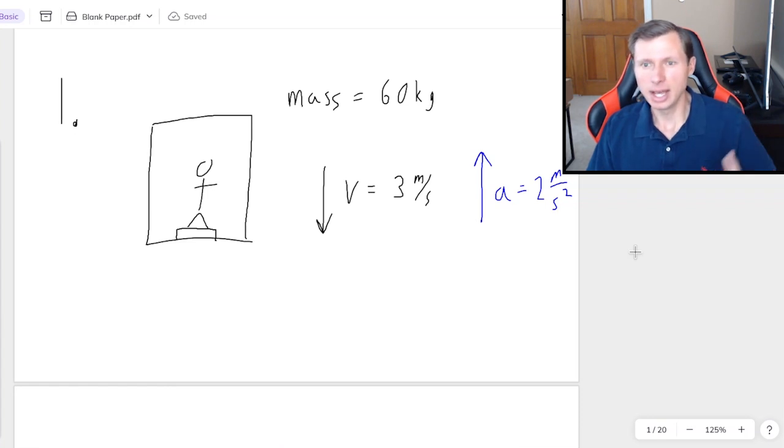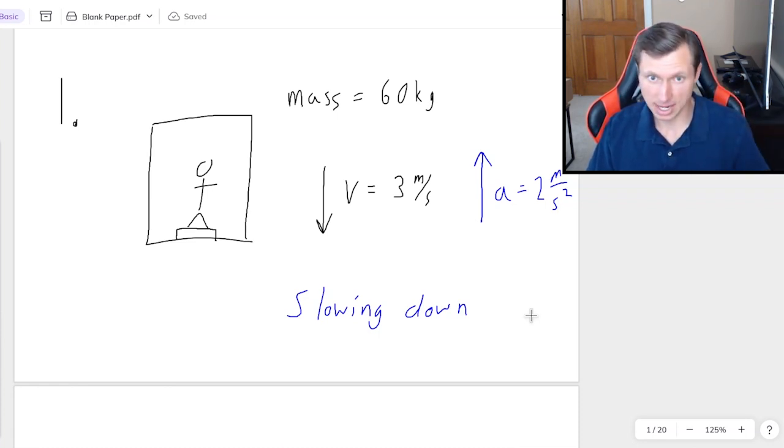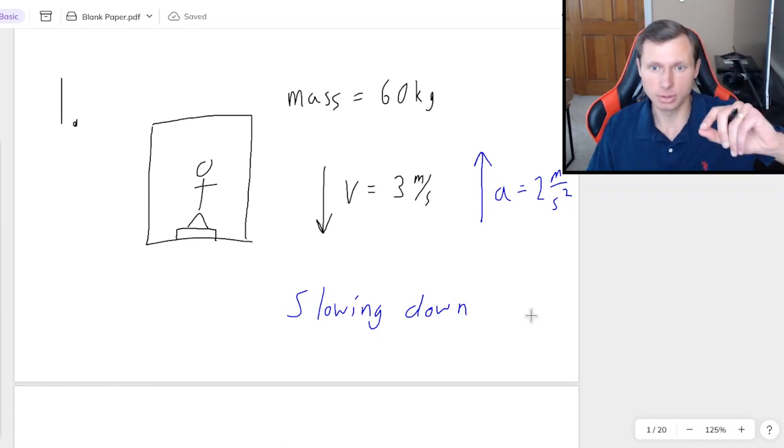Now, the first question I have for you is, is this even possible? And if so, how? How can the velocity be going down and the acceleration going up? I'll tell you. The only way we have this scenario is if the elevator is slowing down. Whenever velocity and acceleration point in opposite directions, we're slowing down. And whenever they point in the same direction, we're speeding up. So, in other words, if the velocity is going down, that means we're moving down and slowing down, which means this person started at the top of the elevator, and they're heading down, and they're slowing to a stop right now.